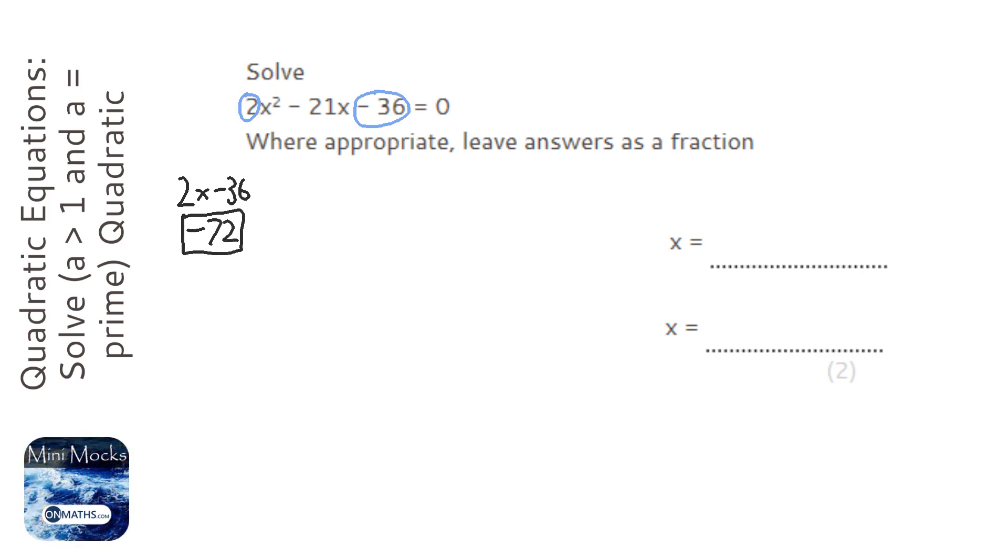So we need a factor pair of minus 72, and they've got to add together to make minus 21. So factor pairs, we could have minus 1, 72, and often it's easier just writing them down positive and just know that one of them needs to be negative. There's no way I'm going to get minus 21 with those two. So we have 2 and 36, again, we're not going to be able to get to minus 21 with those two.